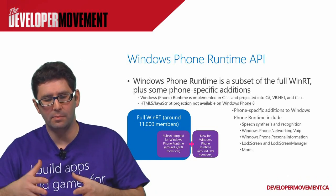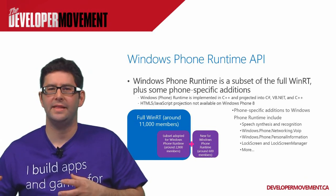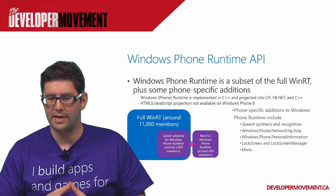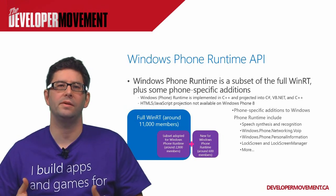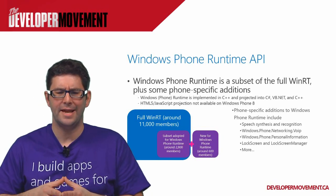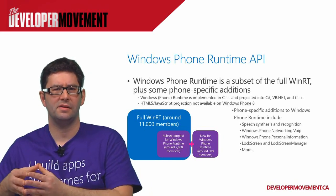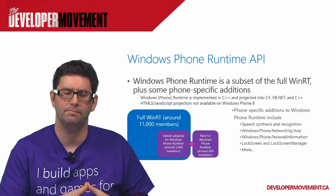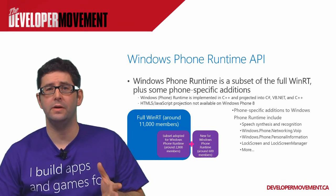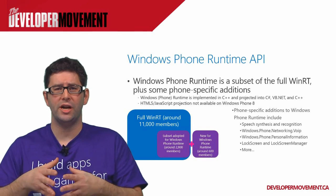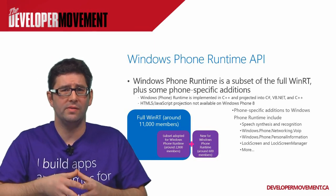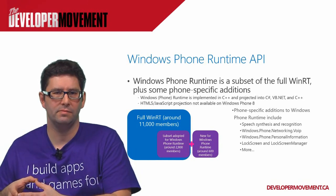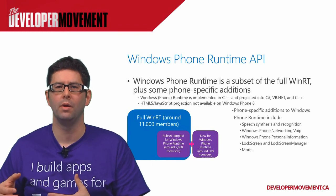In addition to the shared APIs, there's a number of new API sets within WinPRT that have nothing to do with Windows 8 — things like VoIP, speech synthesis, lock screen, and lock screen manager — things that have valid context on the phone but may not have the right context on a PC operating system. The engineering teams tried to provide an easy way to share as much code as possible between Windows 8 and Windows Phone, while catering appropriately to the right platforms. Context is really important when talking about mobile experiences.